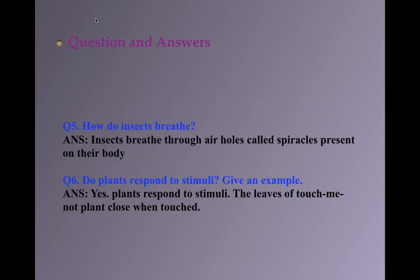Now we will discuss question number 5. How do insects breathe? The answer is, insects breathe through air holes called spiracles present on their body.